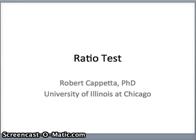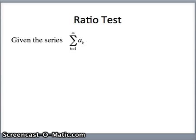This is Bob Capetta from the University of Illinois at Chicago and this lesson is on the ratio test. We're given a series sum as k goes from 1 to infinity of a sub k, or k goes from 0 to infinity. It doesn't matter where the index starts, and we want to determine whether or not it converges by examining a ratio of two consecutive terms.